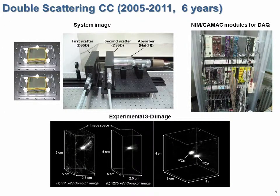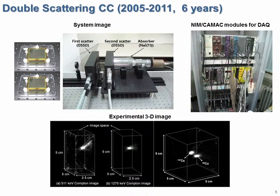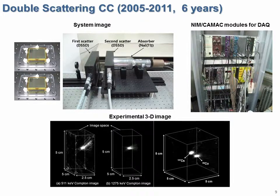Until now, two types of Compton Imaging Devices have been developed based on these techniques, and we are now trying to develop improved imaging devices. This is the double-scattering Compton imaging device developed by our research team. It has excellent imaging resolution using two high-performance semiconductor detectors as scatterers. Below is the 3D image of radiation sources obtained by this imaging device.